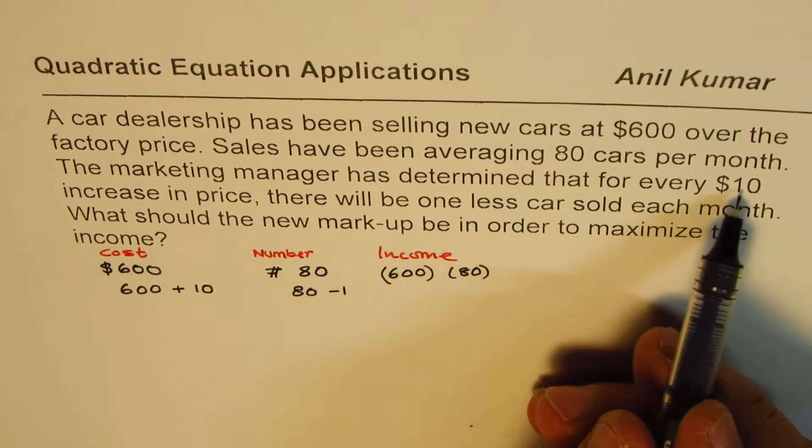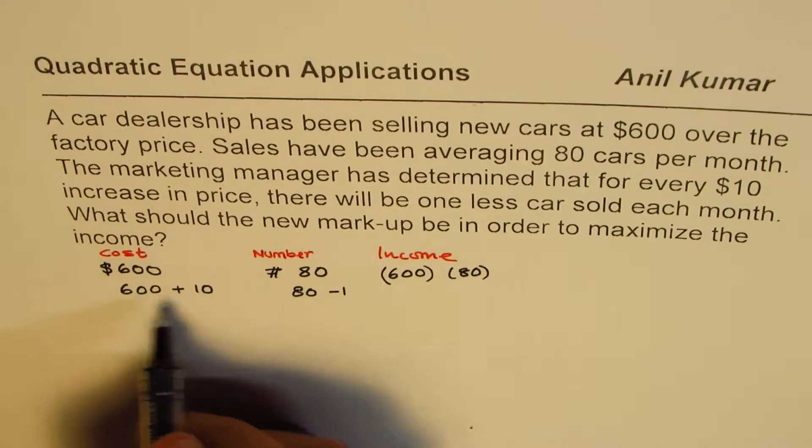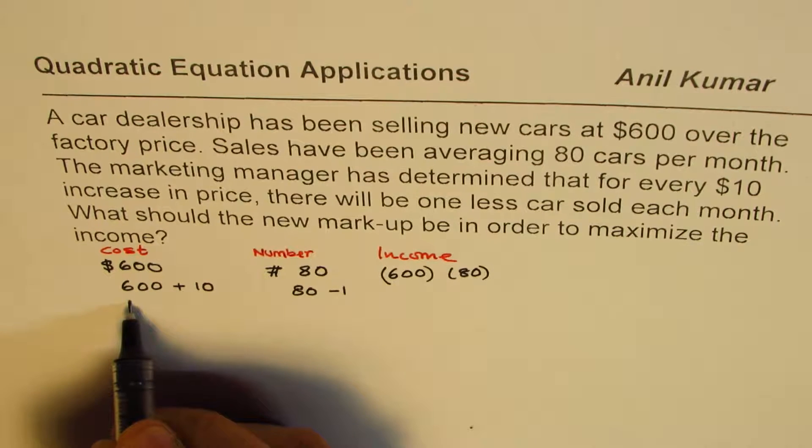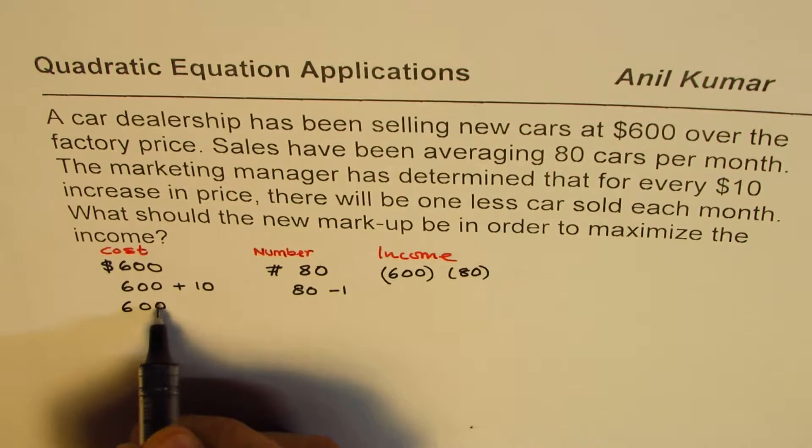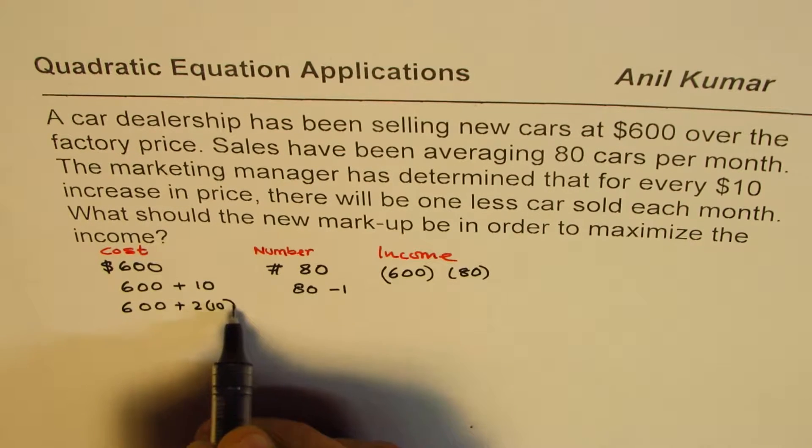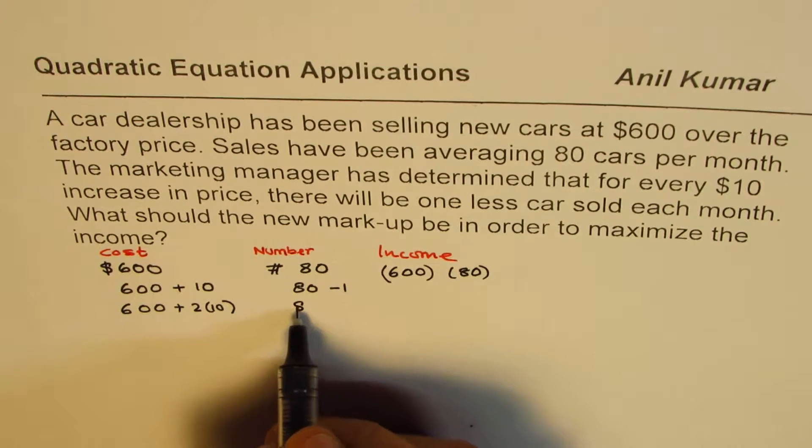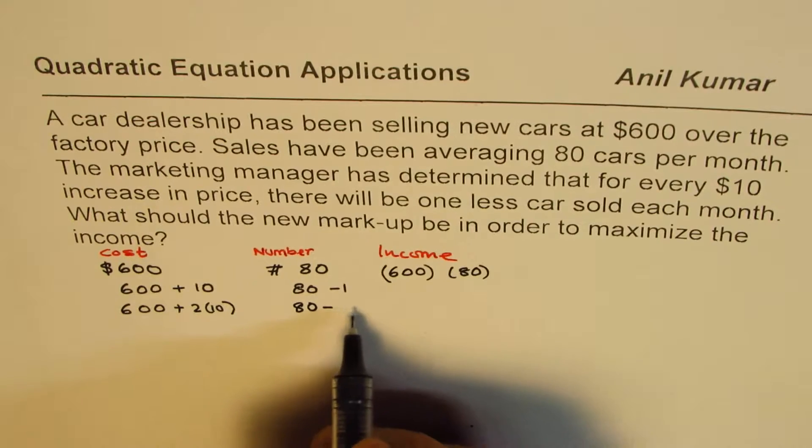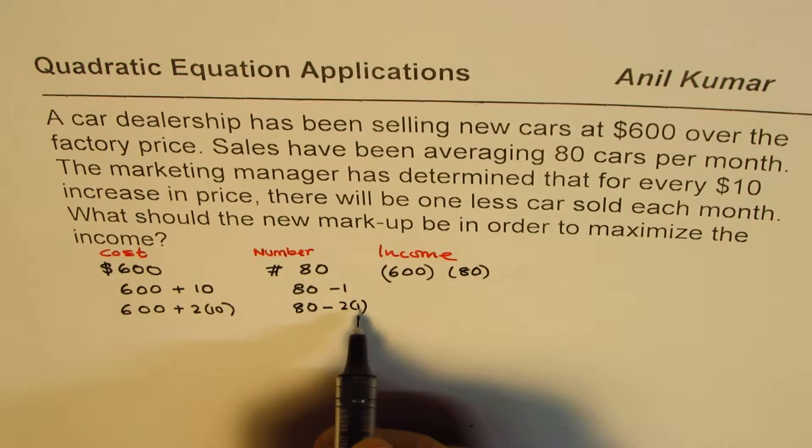So for every $10 increase, if I increase another $10, that is to say I make it 600 plus two times $10, in that case, number of cars sold will be 80 minus two times one.